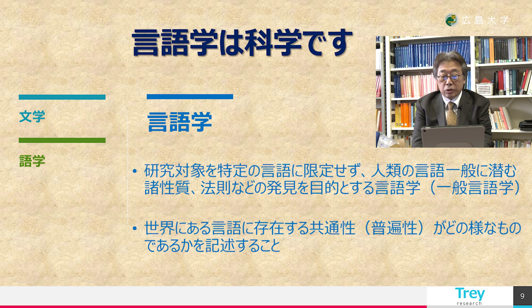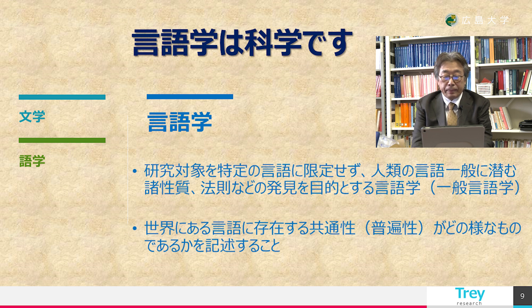言語学と似ている分野として文学や語学というものがありますが、言語学はこれらの分野とかなり異なります。文学は言語によって表現された詩・小説・戯曲などの文学作品を研究する学問です。言語学はこのような個人の言語を研究する分野ではありません。